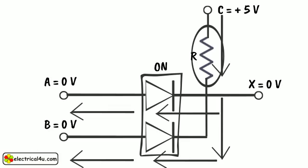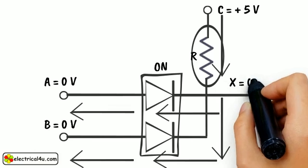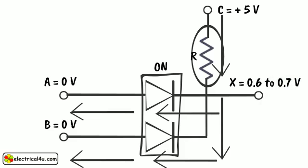This is equal to the forward bias voltage of the diodes. This voltage drop will appear at X during low output condition. So practically, low output will not be zero volts; it is rather 0.6 to 0.7 volts, which is ideally considered as zero.